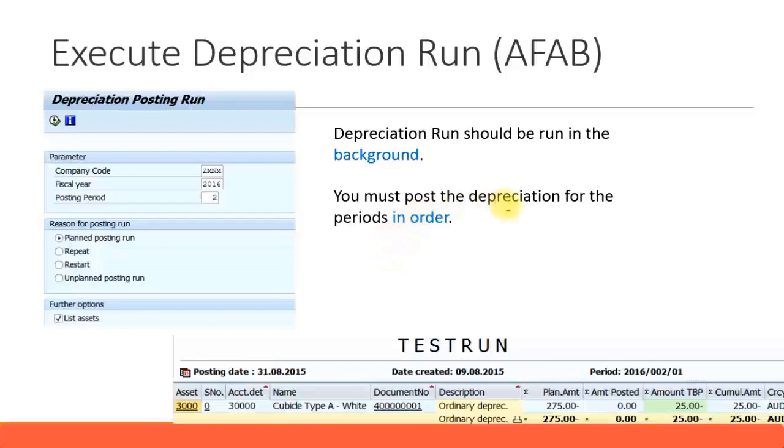You must also post depreciation for the periods in order. For example, you must post for posting period 1 before you proceed to posting period 2. Similarly, you have to go in order for each fiscal year - you must post the depreciation in order for each period.